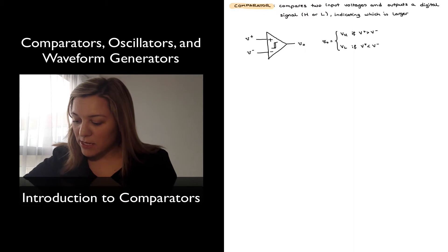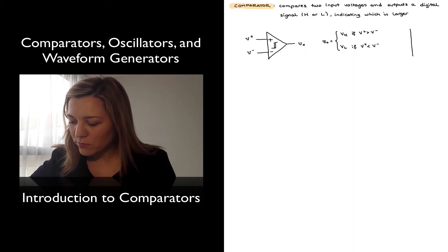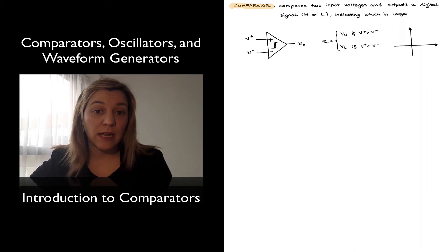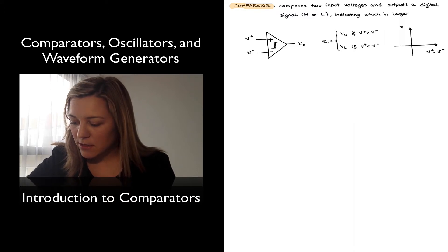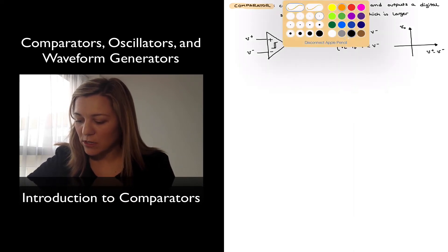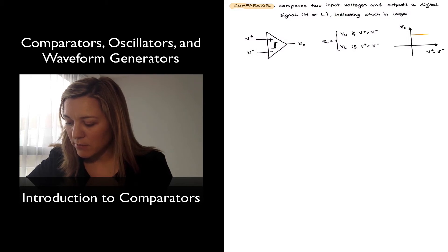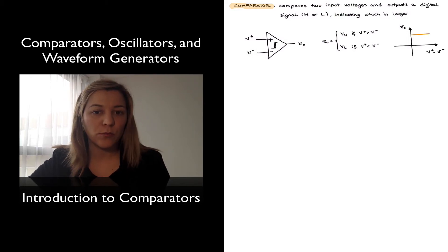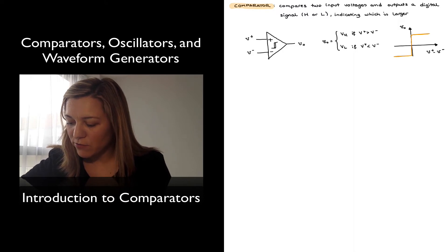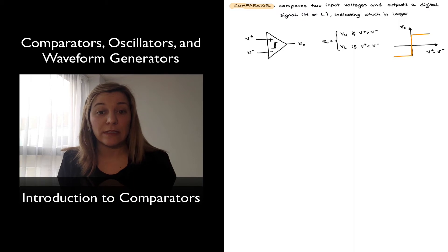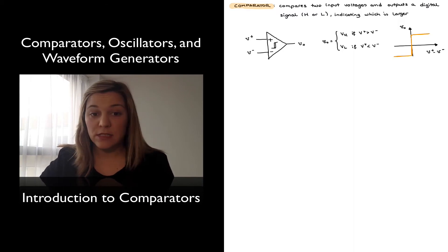If we wanted to represent graphically the ideal operation of a comparator, we could represent the input signal as a differential input signal, V plus minus V minus, and the output signal. The output signal will be sitting at a high voltage for positive differential input signals, and at a low voltage for negative differential input signals. Notice that in the case of an ideal comparator, that transition is instantaneous.